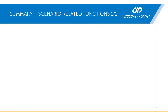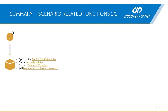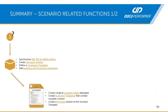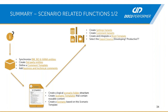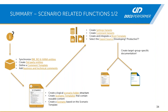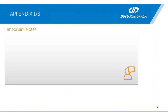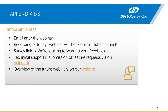To summarize: first think about which information is worth documenting and at which level. Synchronize entities, create third-party entities, define comment templates, and add business and technical comments. Then create a logical scenario folder structure, create scenario templates with reusable content, create scenarios based on those templates, and use the different variants to create target-group-specific documentations. If you have technical problems or ideas for new functions, visit the helpdesk, and you can find future webinars on the website.